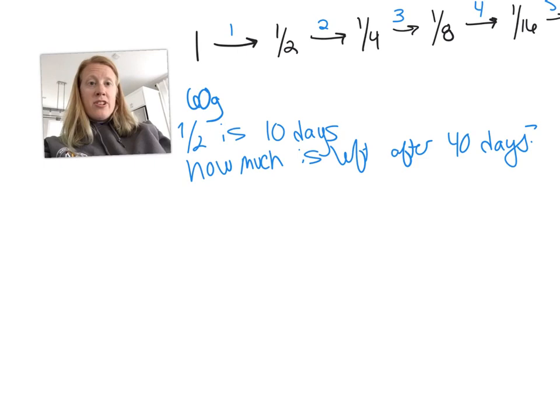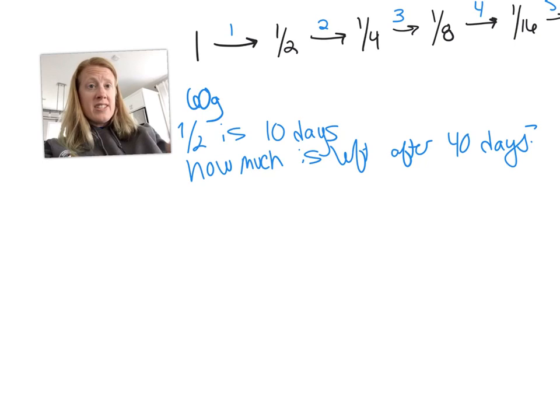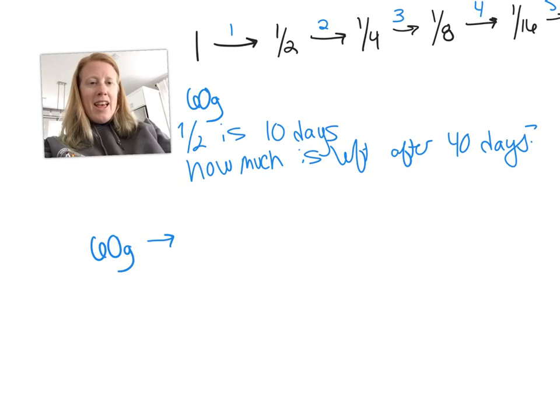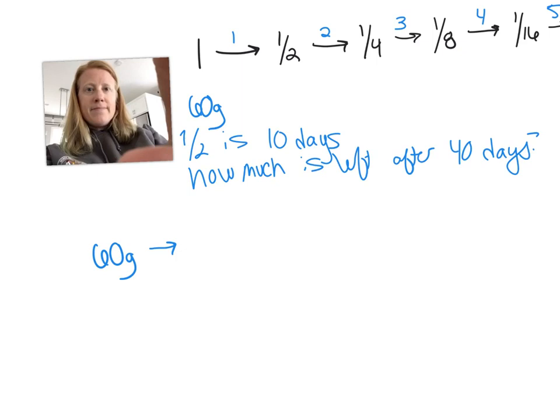So, I'm going to start with my initial amount. Now, since I didn't ask for a fraction, I'm not going to do the one, one-half, one-fourth. I'm going to start with 60 because I started with 60 grams and then I'm just going to decay it. After one half-life, how much is left? I'm going to get numbers I don't really want, but that's fine. After one half-life, I have 30 grams left, right? That's one half-life and that would be 10 days.